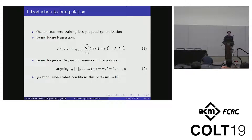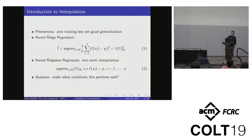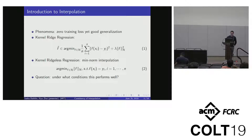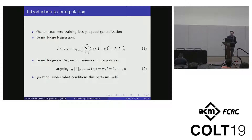Hi everyone. By consistency of interpolation, we mean the following phenomenon: sometimes you can have zero training loss but still have good generalization. This is contrary to the traditional wisdom of machine learning or statistical learning, where there is a trade-off between zero training loss and generalization.